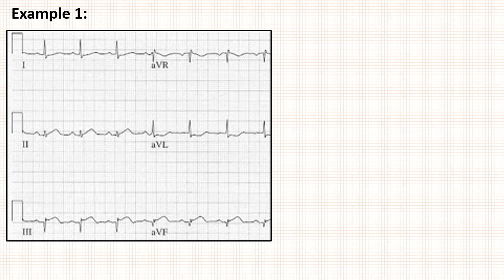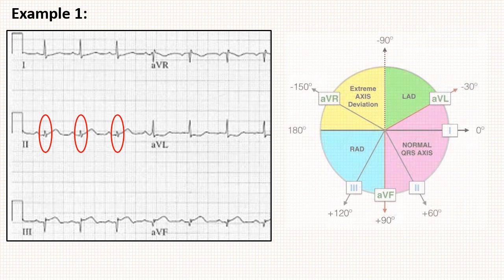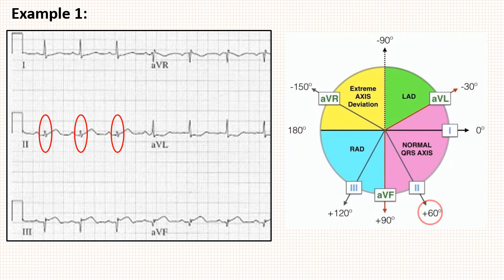First example. Look at this ECG. Apply step 1. You can see clearly that lead 2 has an equiphysic complex. Now, the second step is to find the lead perpendicular to lead 2. So look at this image. Lead 2 is at plus 60 degrees, and the lead which is perpendicular to it is aVL, which is at minus 30 degrees.